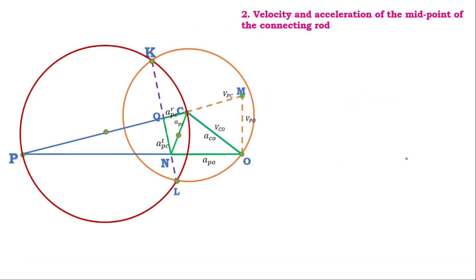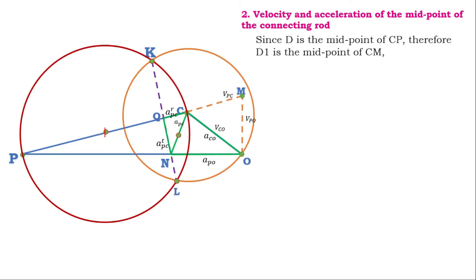Second, we must find the velocity and acceleration of the midpoint D of the connecting rod PC. In the velocity diagram, CM represents the velocity of PC. Since D is the midpoint of PC, we mark the midpoint of CM as D1. The distances C to D1 and D1 to M are equal. We then join D1 to O.